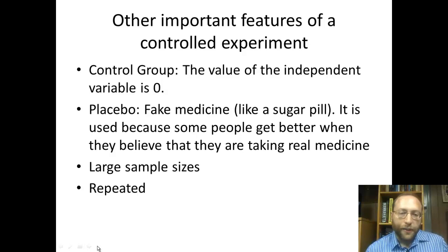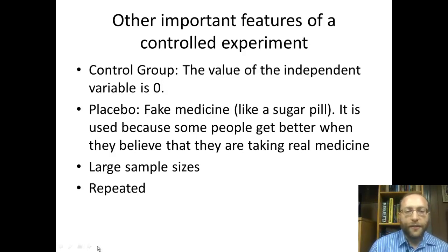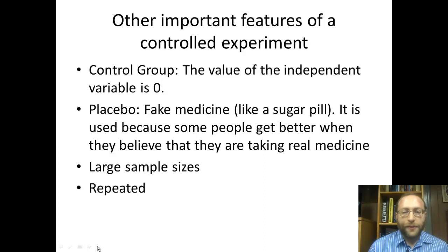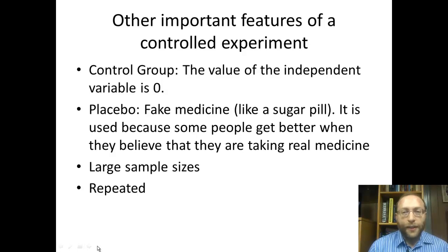Another important thing included particularly when doing trials with medicine — to see if a medicine works — is to use a placebo. A placebo is fake medicine, usually something like a sugar pill, something that does nothing. That's because someone taking medicine is another variable. Some people get better just from taking a placebo. Experiments have shown that people given a placebo actually have a better chance of getting better than people who took nothing, so a placebo is very important.